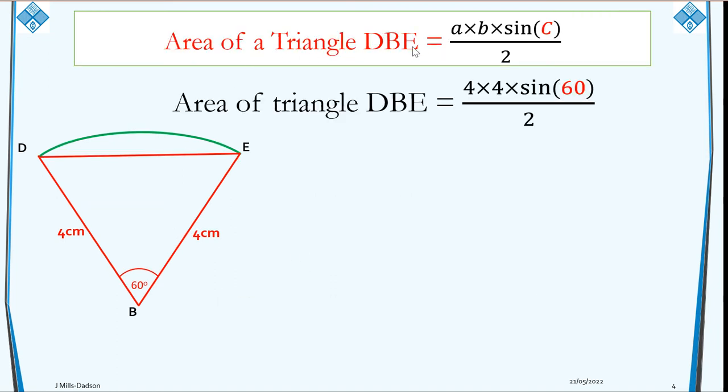Now let's work out the area of a triangle. Because to work out a segment, we need the area of a triangle. The area of triangle DBE is given by (1/2)ab sin C. Using the same properties, our C is angle 60, and our A and B are 4 and 4, that's the radii.